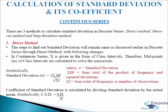Now we come to calculation of standard deviation and its coefficient in continuous series. In continuous series there is corresponding frequency f given against value of variable x, which is in the form of class intervals. We need to find midpoints m. The m will be used as x for values of the variables. There are three methods: direct method, shortcut method, and step deviation method to calculate standard deviation and its coefficient.